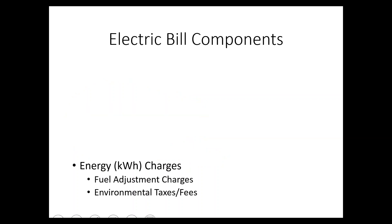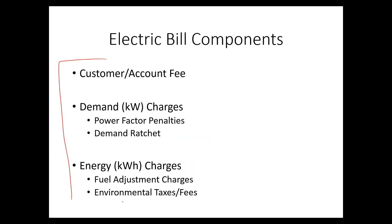The same time-of-use concept applies to kilowatt-hours. Some utilities don't charge demand at all but instead charge very high kilowatt-hour prices when you take energy during certain hours — primarily the afternoon. For comparison, if you use energy at midnight you might pay one price, but it could be five times more expensive to use the same amount of energy at 4 o'clock in the afternoon. That's a summary of the three major components of most electric bills around the world.